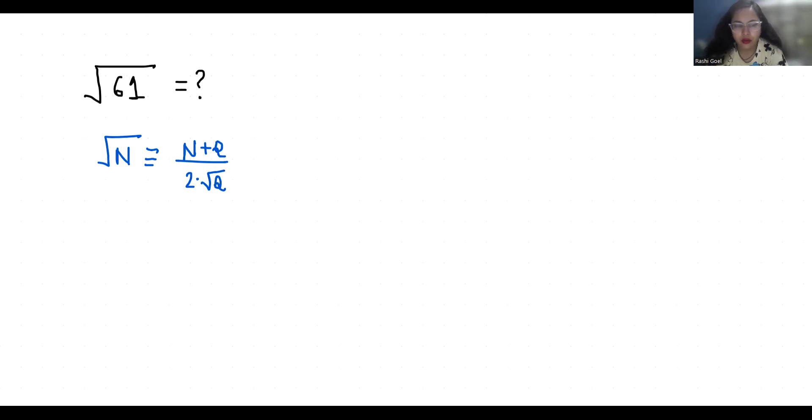So let's find out. n is 61. If we write squares: 0 square is 0, 1 square is 1, 2 square is 4, 3 square is 9, 4 square is 16, 5 square is 25, 6 square is 36, 7 square is 49, 8 square is 64.